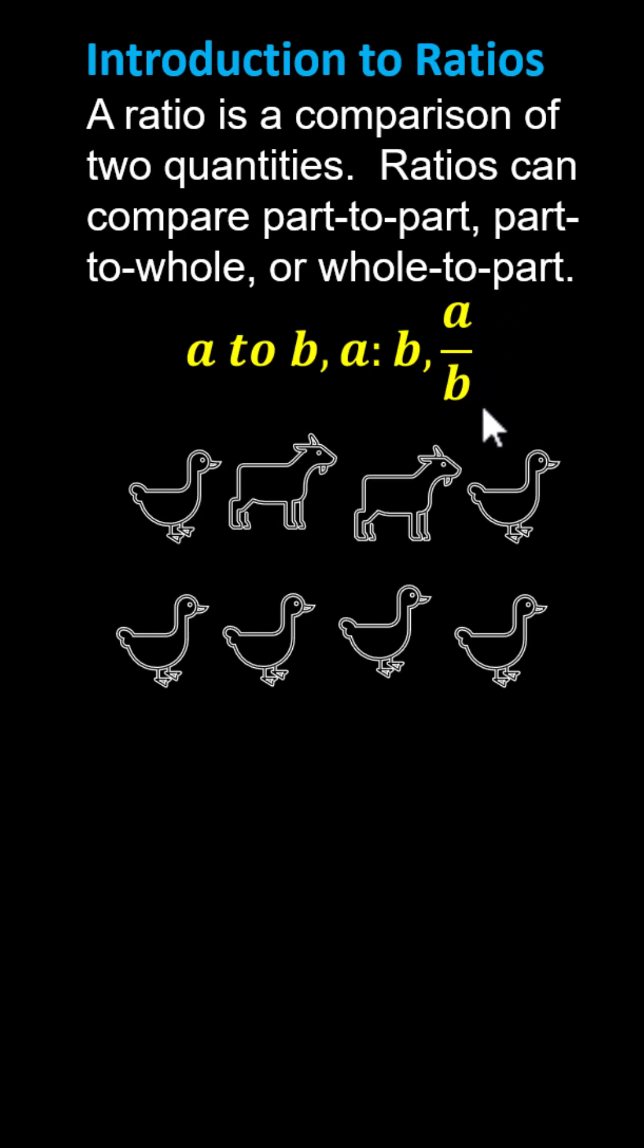Let's take a look at an example using the diagram below. Notice there's a total of eight animals. Let's find the ratio of goats to ducks. Let's first count the number of goats. We can see there are two goats and there are a total of six ducks, and therefore the ratio of goats to ducks is two to six.